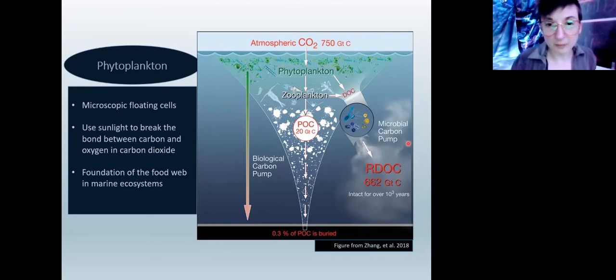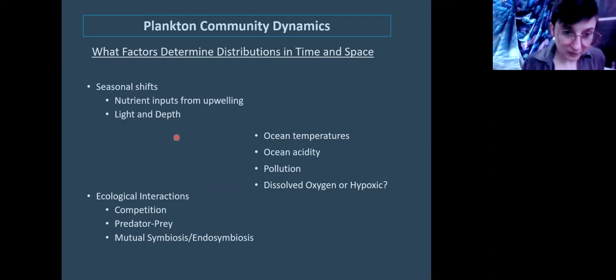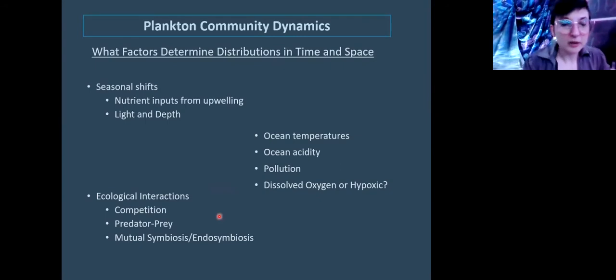There is also a microbial carbon pump or microbial loop, but I don't have time to talk about it, unfortunately. Some things I'm really interested in is how plankton communities change over time and space. Seasonally, there's always going to be changes if it's warmer. There's more sunlight and it also brings in new nutrients with seasonal shifts. That plays a large role—classic ecological interactions like competition, predator-prey, but particularly mutual symbiosis and even more so endosymbiosis. It's actually very, very prevalent among phytoplankton and microbes in general.